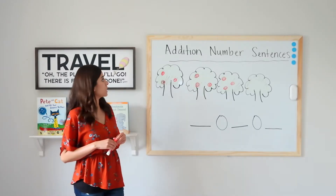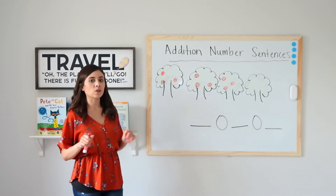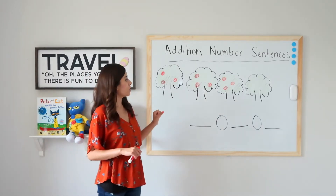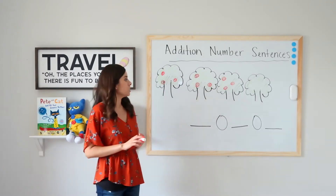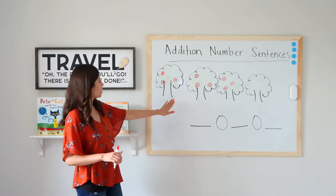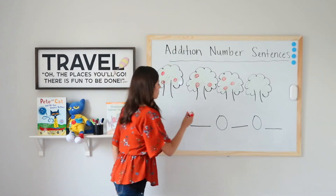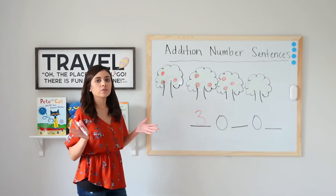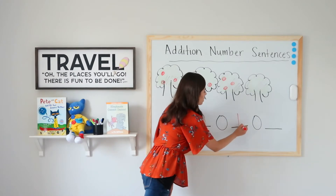So now we are going to form an addition number sentence using the picture above. Here's the story: at the park, there are three apple trees. There is also one fruitless tree. How many trees are there in all? We already know there are three apple trees, so I'm writing my first part. And we have one fruitless tree as my other part.